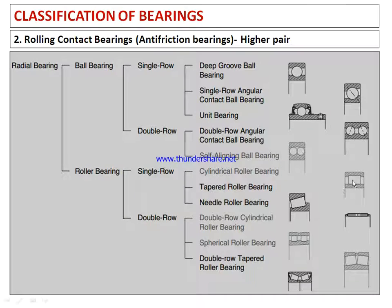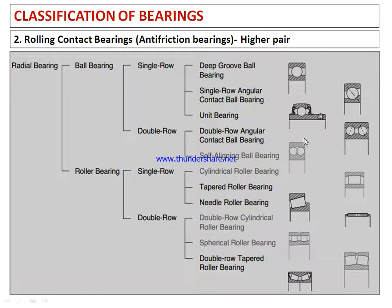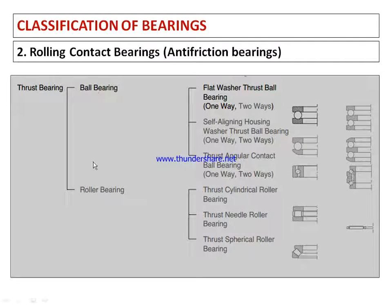In roller bearings, we have cylindrical roller bearing, tapered roller bearing — using tapered rather than straight rollers — needle roller bearing with small-sized needle rollers, double row cylindrical roller bearing, and spherical roller bearing. The second category in rolling contact bearings is the thrust bearing, which takes up the axial or thrust load along the axis. Under thrust bearings, we have ball thrust bearings and roller thrust bearings.